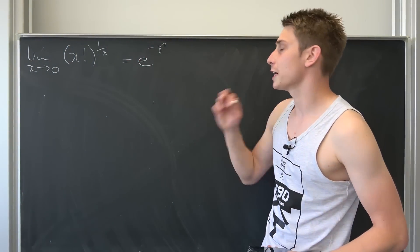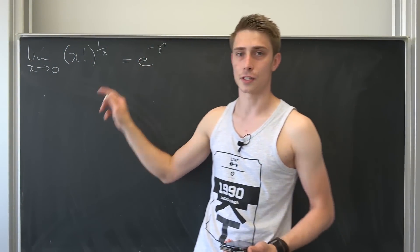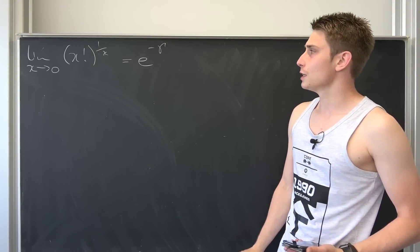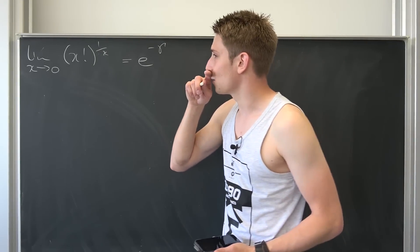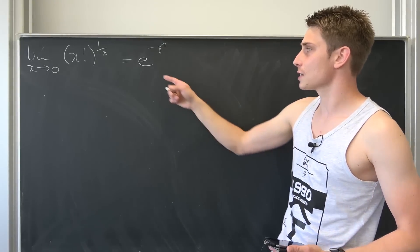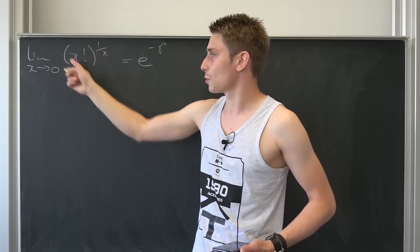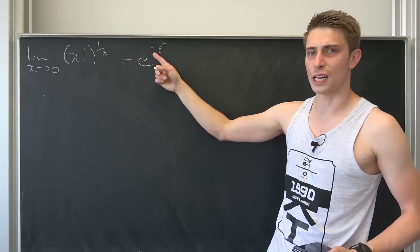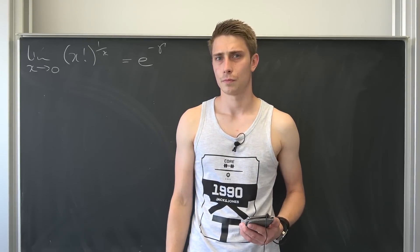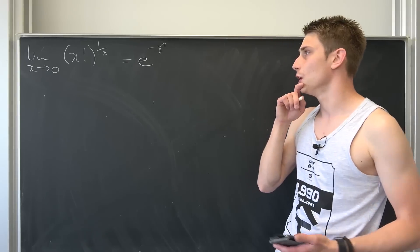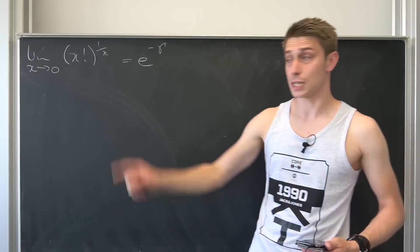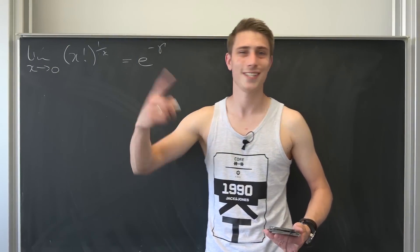In today's improvised session we are going to calculate this. Since the exponential function is continuous, it means that the natural log of this thing is actually going to go to negative Euler–Mascheroni constant. We already derived an integral representation for that. Let me close the window and we'll get started.